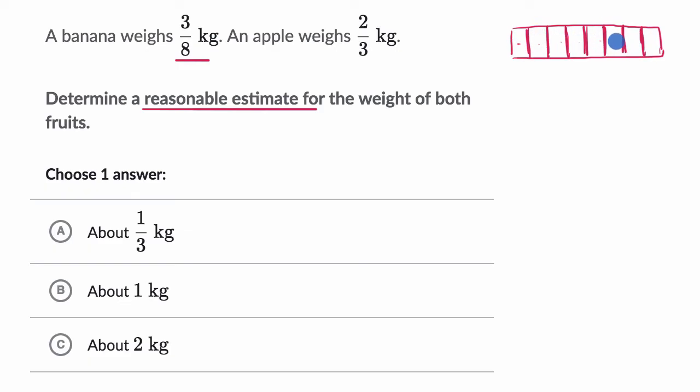And so this would get me to eighths. So I have eight sections here. One, two, three, four, five, six, seven, eight. If I'm talking about three of those eight equal sections, I'd have one-eighth, two-eighths, and three-eighths. So that is three-eighths right over there.